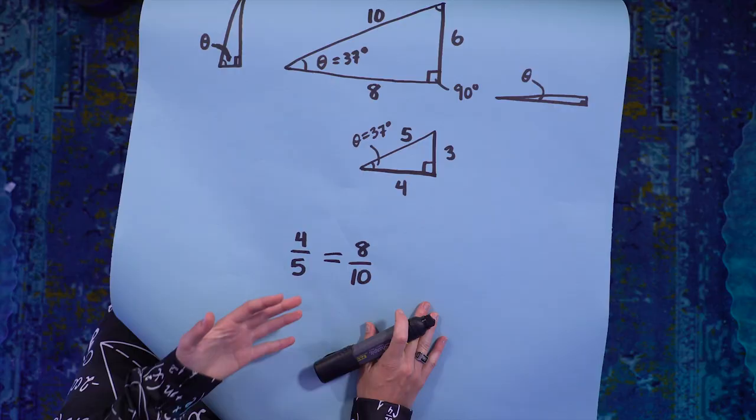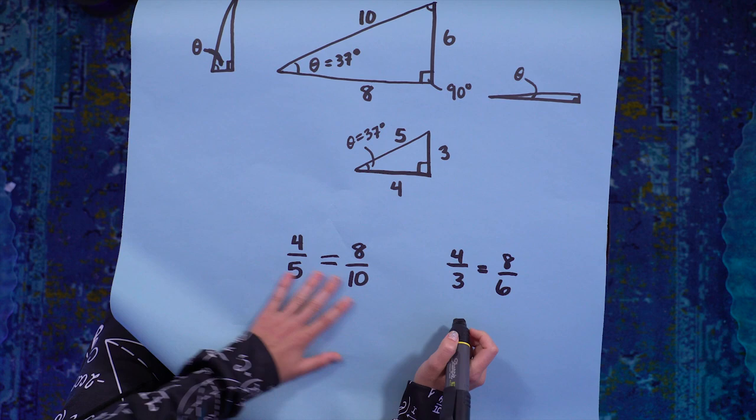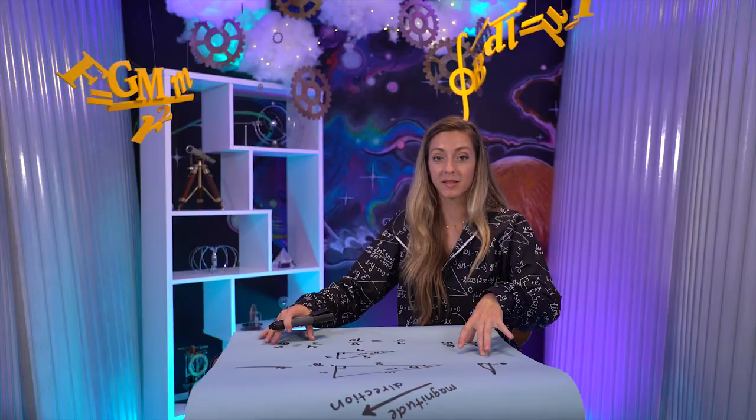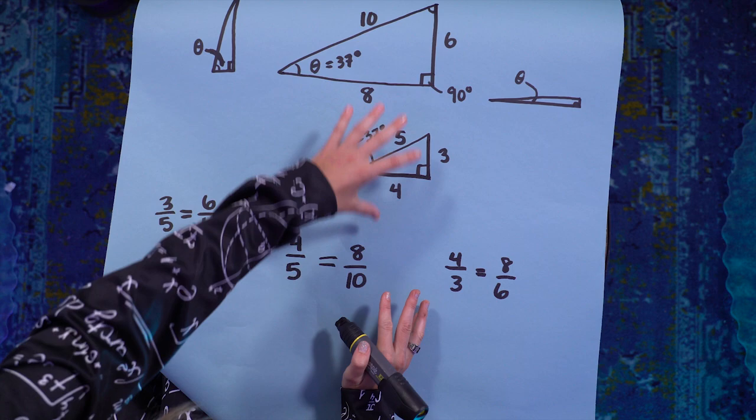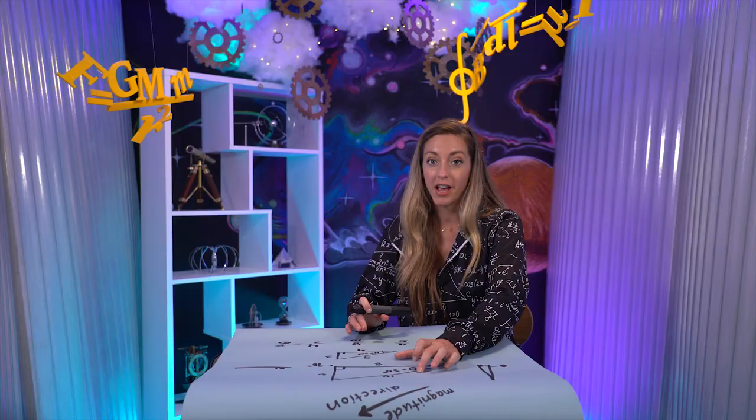4 to 3 equals 8 to 6. 3 to 5 equals 6 to 10. This always happens with similar triangles. If I set my angles in a right triangle, then the ratio of the sides is independent of the size of the triangle. In fact, we have a name for those ratios,